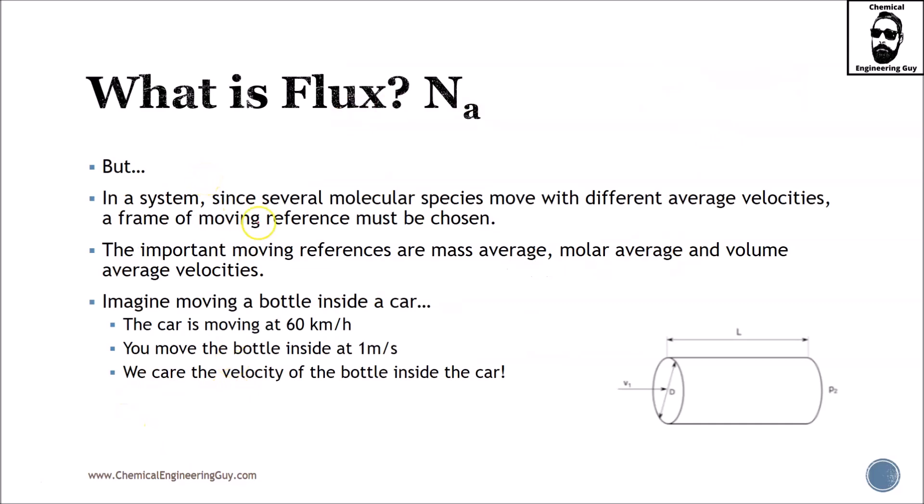But in a system, since several molecular species move with different average velocities, that's important. Remember the example I mentioned—molecules are moving crazily throughout the pipe, not only from left to right. What we measure is the bulk velocity, but individual velocities are hard to calculate.